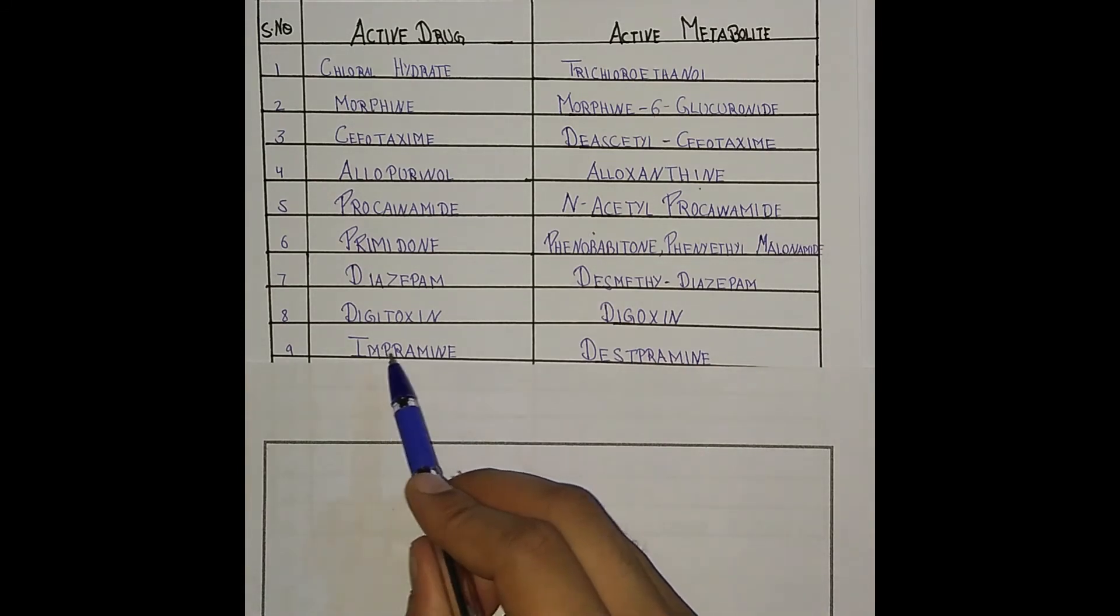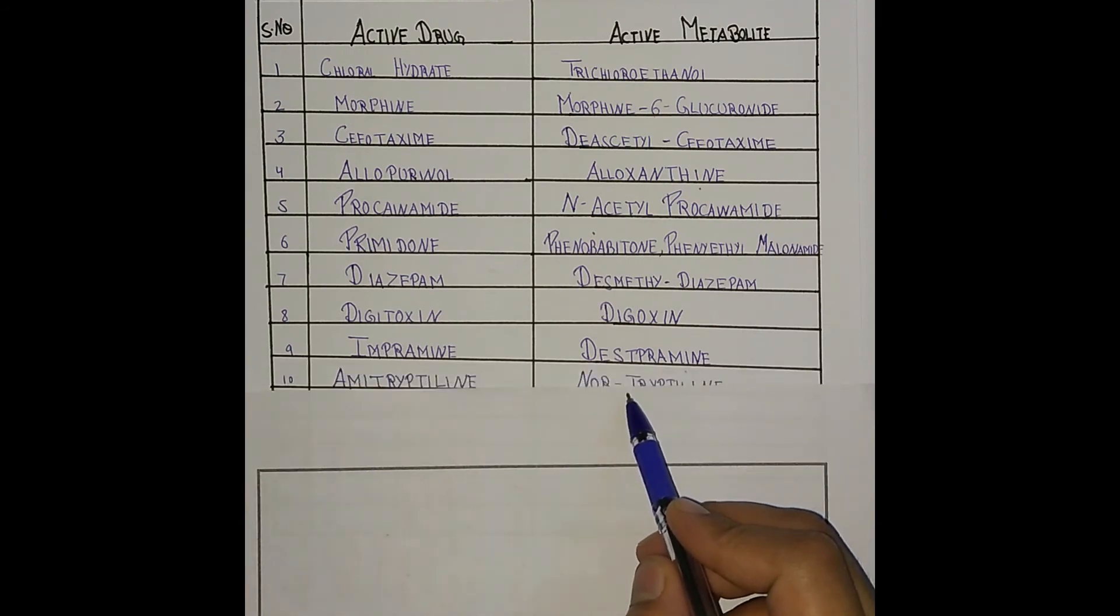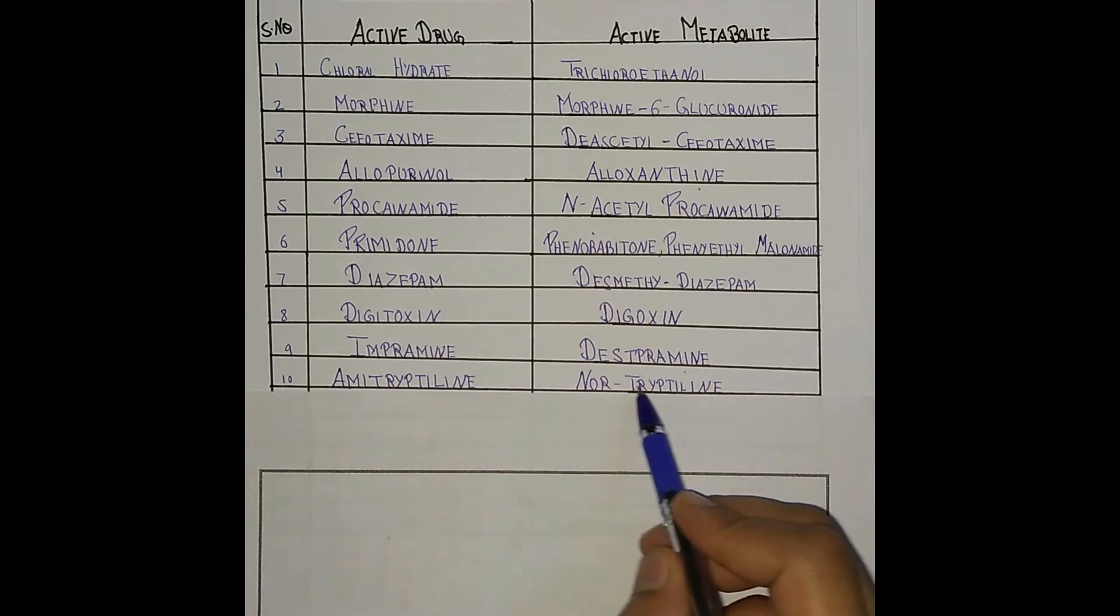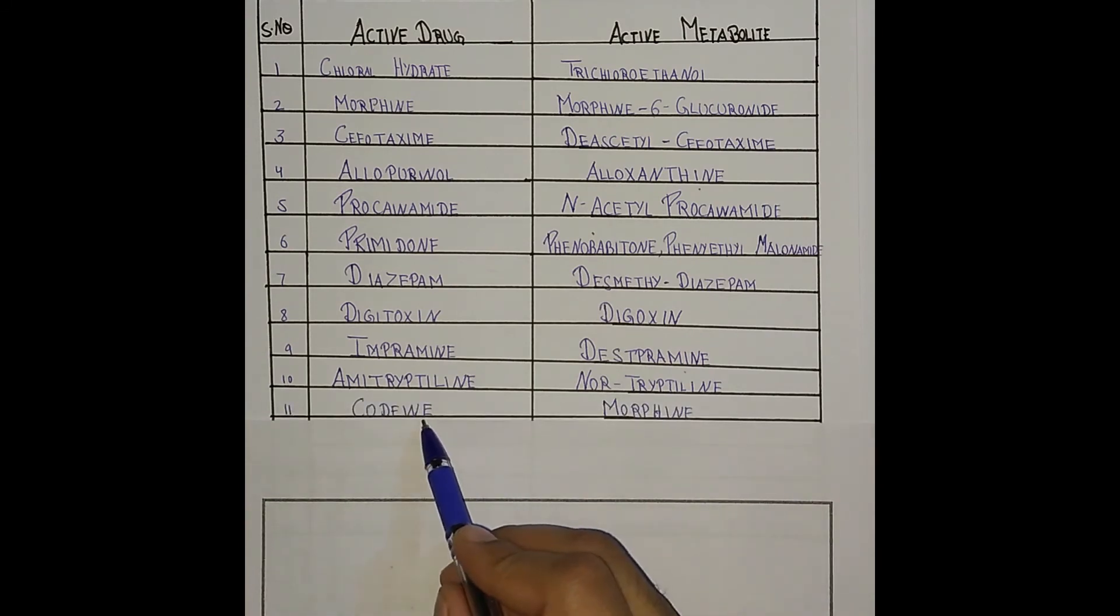Imipramine has the active metabolite desimipramine. Next one is amitriptyline. Amitriptyline has a very easy one - nortriptyline. Next one is codeine. Codeine is very important, important, important.